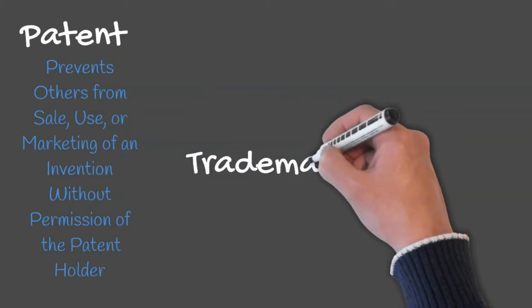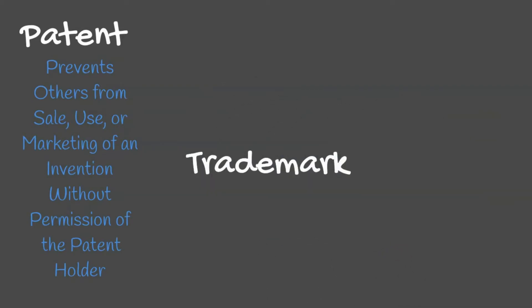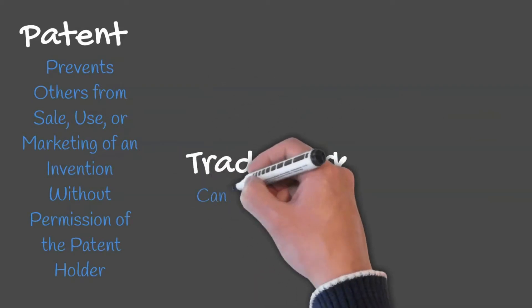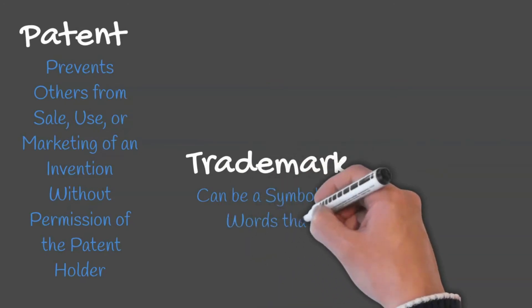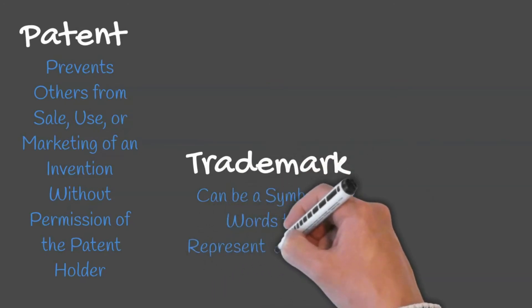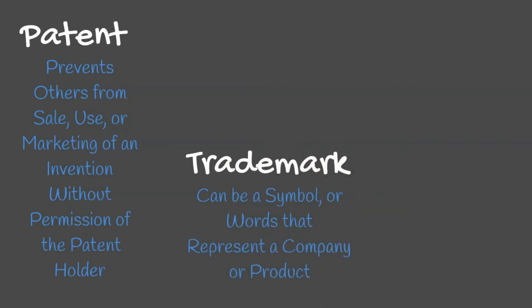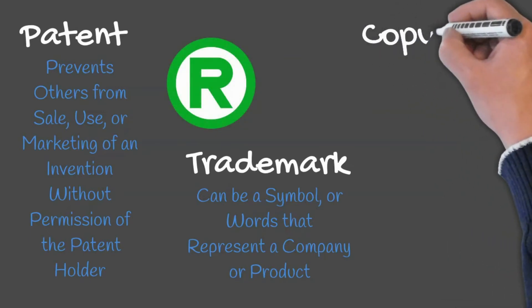A trademark can be a symbol or words that represent a company or product. Service marks are like trademarks but apply to services. A registered trademark is a trademark that has been registered with the US Patent and Trademark Office.